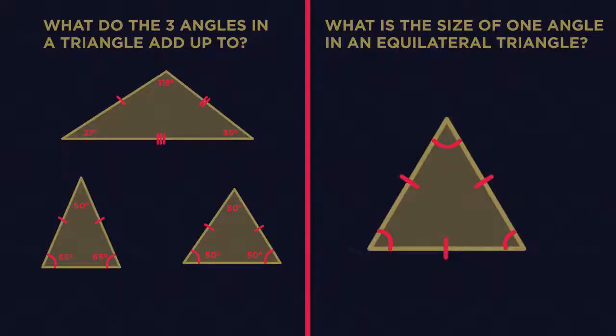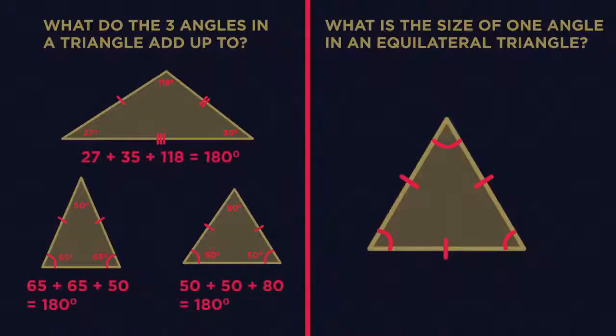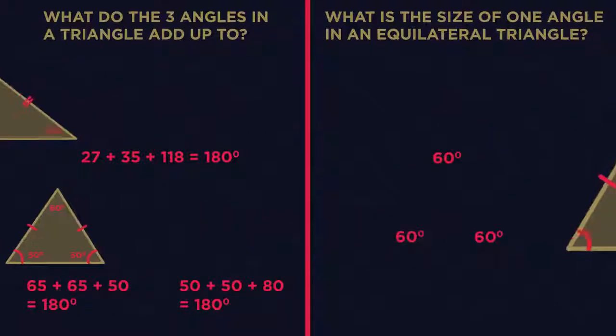If you didn't already know, the three angles always add up to 180 degrees. And because an equilateral triangle has three equal angles, each angle must also always be 60 degrees.